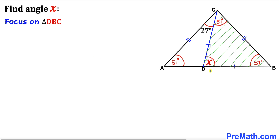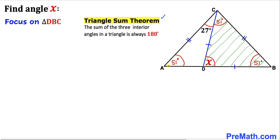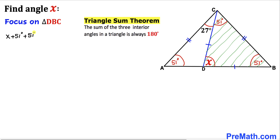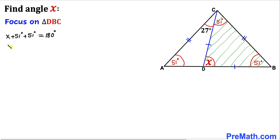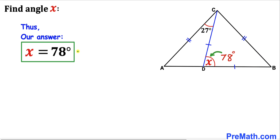Here's our final step. Let's focus on triangle DBC once again and recall the triangle sum theorem. The sum of the three angles equals 180 degrees, so angle x plus 51 degrees plus 51 degrees equals 180 degrees. Combining like terms: x plus 102 degrees equals 180 degrees. Subtracting 102 degrees from both sides, angle x turns out to be 78 degrees.